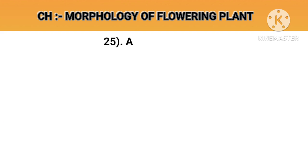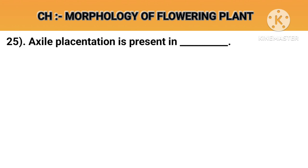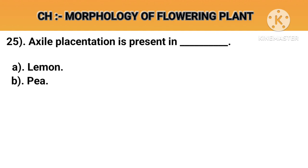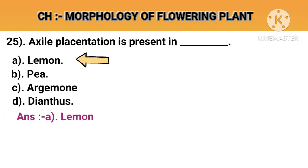Question number 25. Axile placentation is present in. Option A: Lemon. Option B: P. Option C: Arjman. Option D: Dianthus. Answer A: Lemon.